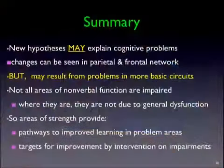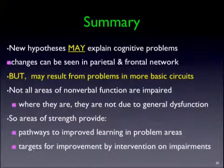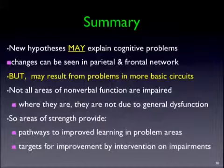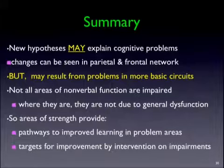Where they are impaired, it's not due to general dysfunction — this is not a globally dysfunctional brain; there are some rather specific things going on. The areas of strength provide pathways to improved learning in problem areas. If you know a child can deal with very small sets of objects and count them fine, then split big groups into very small, distinct ones separated in space so they won't get confused. If you want to compare differences, start with a very big difference and work down to smaller ones — don't go the other way. Some of these areas in mind and brain could also be targets for direct intervention.